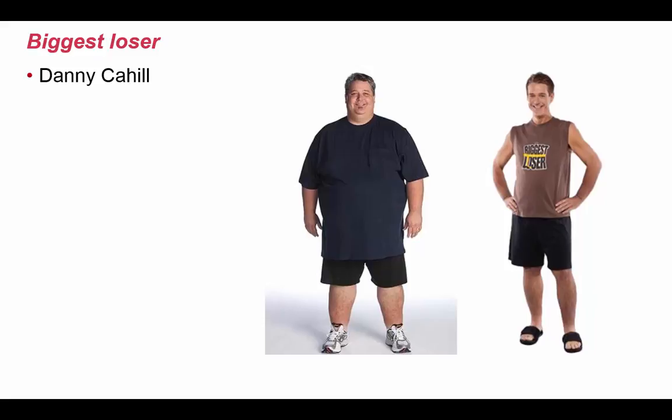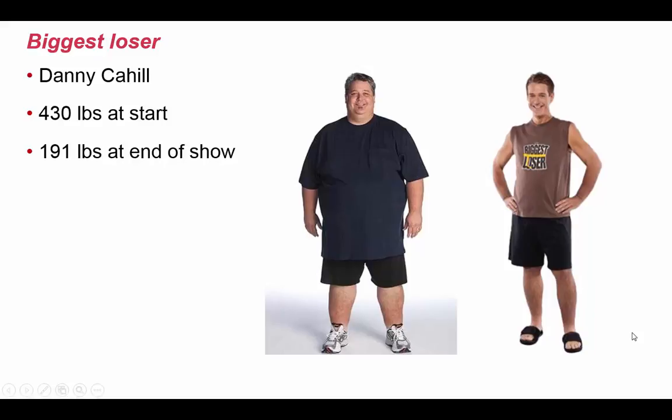Several years ago, in one of the later seasons of Biggest Loser, there was a contestant named Danny Cahill. When he started the show, he weighed 430 pounds. Over the period of that season, he lost more weight than anyone had ever lost on the show, ending at 191 pounds. Obviously he won that season — you can see what he looked like to start with versus at the end.